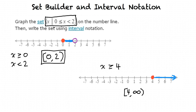We write it like this: bracket 4, comma, infinity symbol. The sideways figure-8 means infinity, and we write a parenthesis afterwards because it isn't a real number, so it can't be included. The values are only approaching infinity, but never actually reaching it.